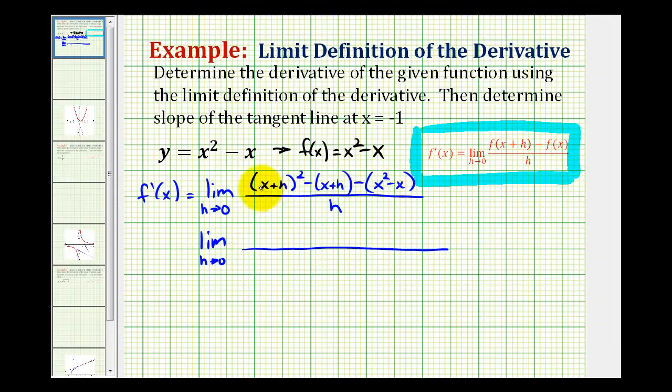So, if we multiply x plus h times x plus h, we're going to have x squared plus 2hx plus h squared. Now just in case I lost you there, we have x squared plus hx plus hx, that's 2hx, and then plus h squared.